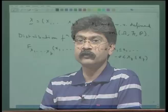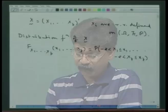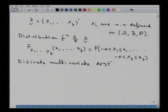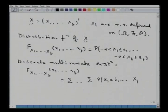Let us now make a distinction between discrete and continuous multivariate random variables. For a discrete multivariate distribution, the distribution function F(x1, x2, ..., xp) is defined as a p-fold summation over all points where we have P(X1 = i1, ..., Xp = ip), where i1 ≤ x1, ..., ip ≤ xp. This is how the distribution function for a discrete multivariate random variable is defined.